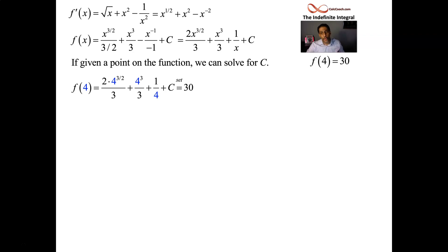A little bit of arithmetic here. Not that bad. 4 to the 3 halves. Square root first. Square root of 4 is 2. And then we cube it. So that's an 8 in disguise. So the first term is 16 over 3. Second term is 64 over 3. And then we have a 4th.